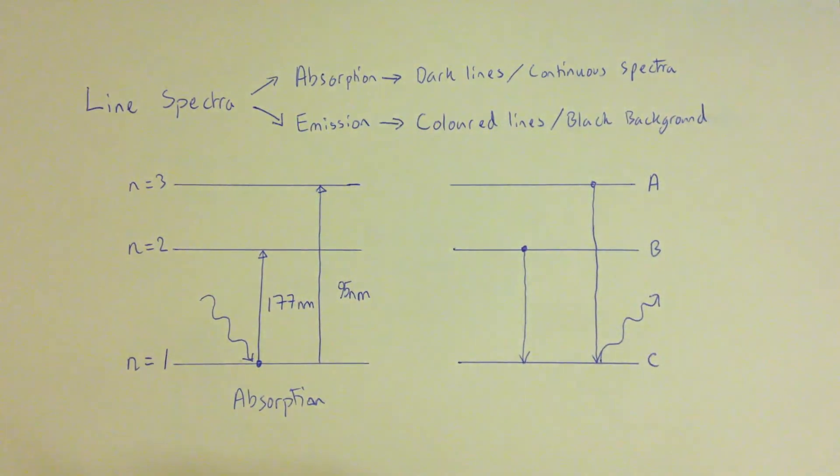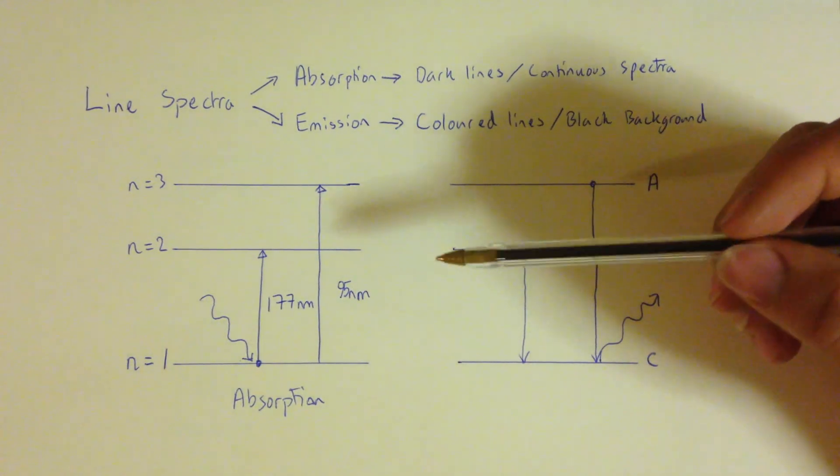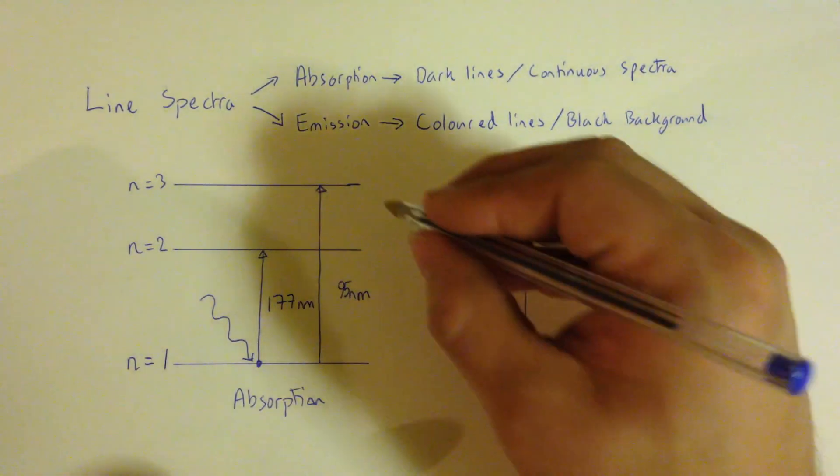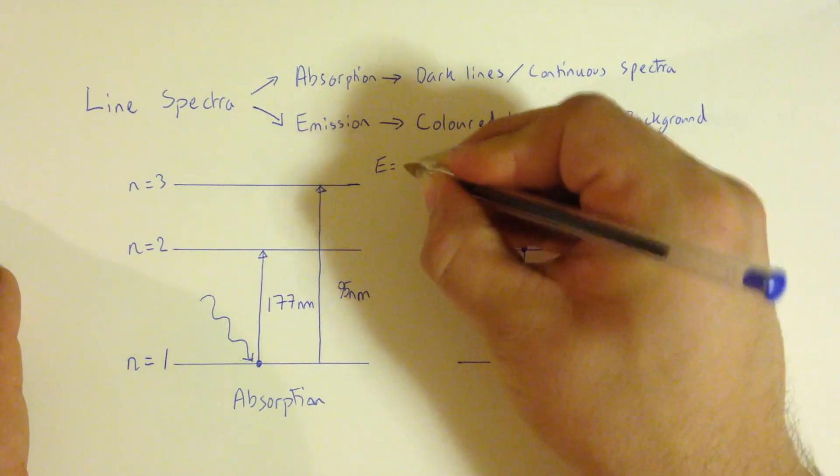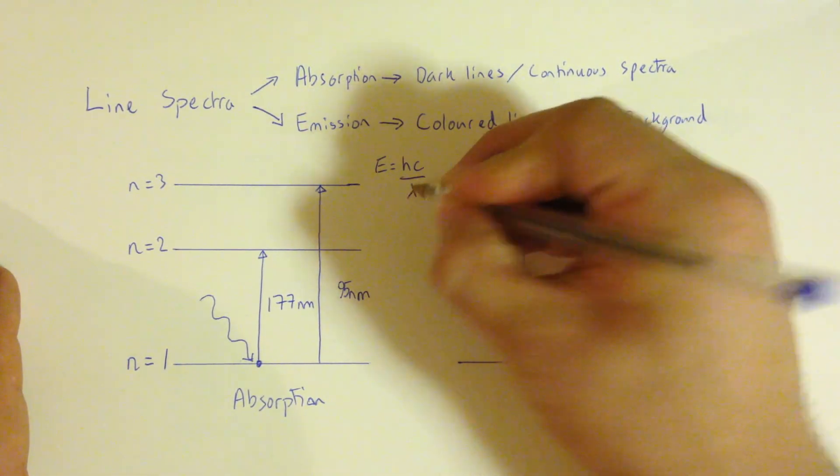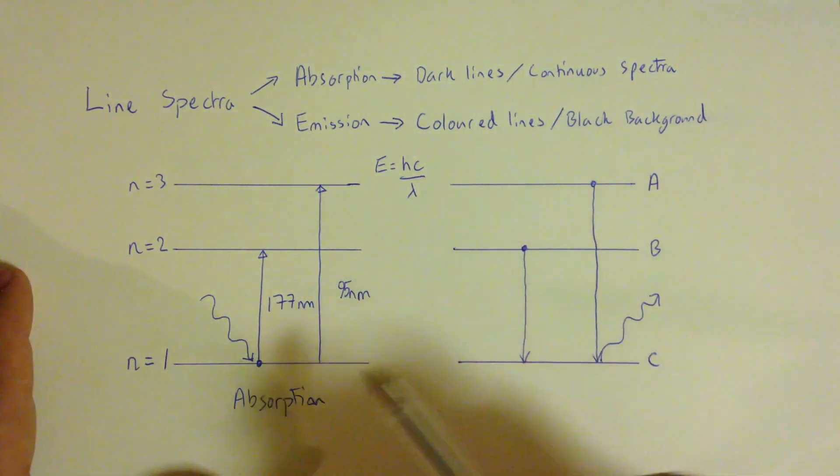Now you might think, well, that doesn't make sense because this number's smaller. You must remember that energy is inversely proportional to wavelength. So we have the equation that we're going to use quite often in this. Energy is equal to Hc over lambda. So in terms of proportionality, E is inversely proportional to lambda. So a smaller wavelength corresponds to a higher energy.